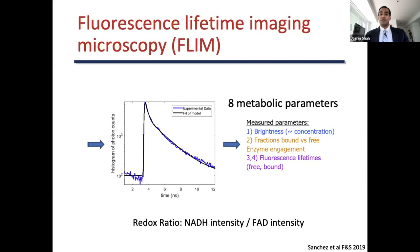Brightness, or concentration, is the number of excited fluorophores divided by the area of an embryo and the number of integrated scans. Fraction bound is the extent to which the molecules are engaged with enzymes. Short lifetime is the average time FAD is bound to the enzyme or the average time NADH is not bound, and long lifetime is the average time NADH is bound to an enzyme and the average time FAD is not. Another useful value is redox ratio, which is NADH intensity divided by FAD intensity, representing how well the electron transport chain is functioning.